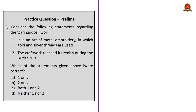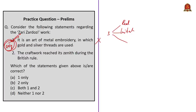Consider the following statements regarding Zari Zardosi work. Statement 1: It is an art of metal embroidery in which gold and silver threads are used. This statement is correct — but be careful if the statement says 'only gold and silver threads are used,' because there are three types and only in Real Zari are gold and silver used. Since there is no extreme word 'only', statement 1 is correct. Statement 2: The craftwork reached its zenith during British rule. This statement is incorrect because it reached its zenith during Mughal rule, especially during Emperor Akbar's rule. Therefore the correct answer is option A, one only.